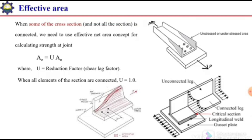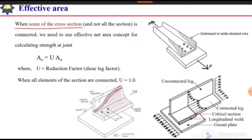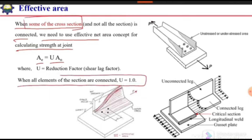Welcome to Engineering Studio with Dr. Muhammad Tahir. In this video we are going to discuss the concept of effective area when some of the cross section is connected. We need to use the effective net area concept for calculating the strength. AE will be equal to U times AN — net area times the reduction factor or shear lag factor. If the whole area is connected, this shear lag factor will be equal to 1, and AE will be equal to AN.